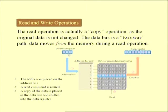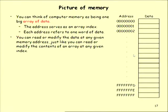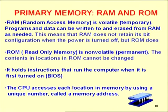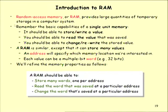In a read operation, address 3 is output first, selecting the third byte. Then a read command is issued, and the memory outputs the data on the data bus from location 3 into a register. Inside a memory, data is stored in an array, each location with its own address, and content is written in hexadecimal form. RAM is used as main memory and ROM is used in the BIOS inside the computer.